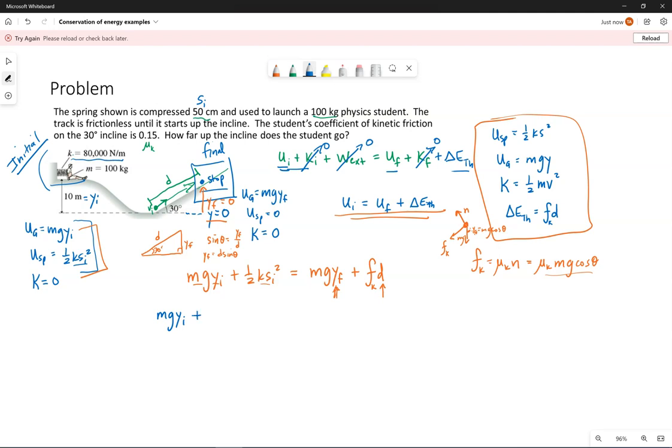mgy initial, one half ks squared, mg, so in place of y final I have d sin theta, where theta is our 30 degrees. In place of the friction force, mu mg cosine theta. But again, don't forget d. It's common to forget d.